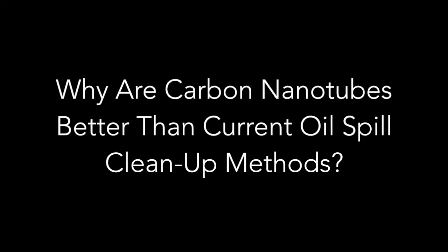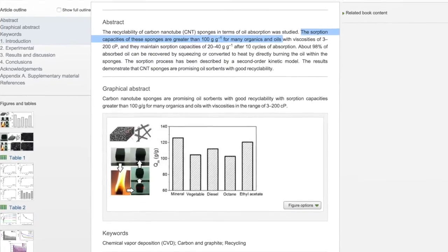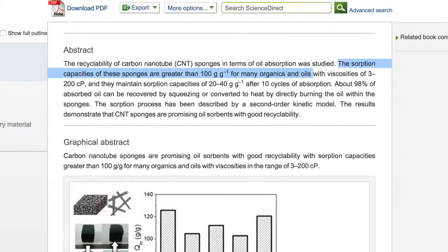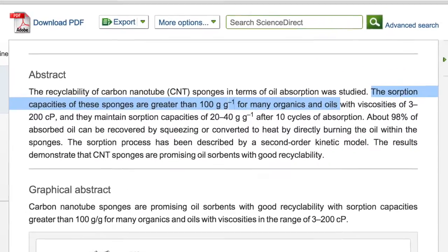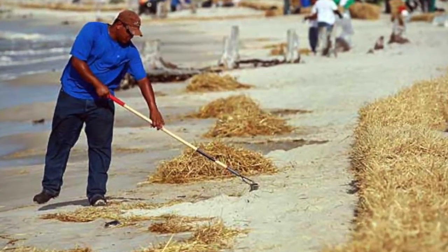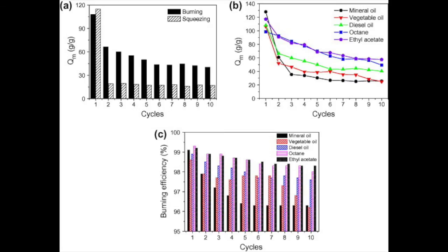As stated earlier, CNT sponges are both hydrophobic and oleophilic, making them optimal for oil spill cleanup. The sponges have a saturated sorption capacity over 100 grams per gram, which is nearly five times more absorbent than other commercial sorbents currently used, and up to 96% of the oil absorbed by the sponge can be safely removed and reused through compression and burning.